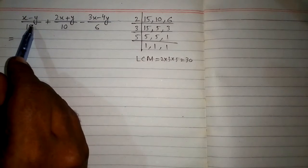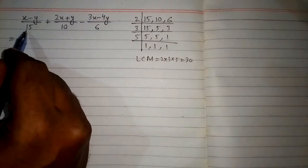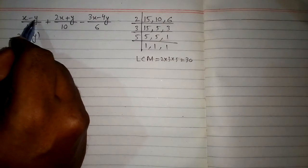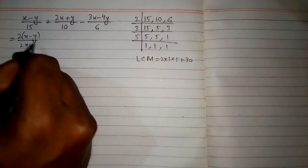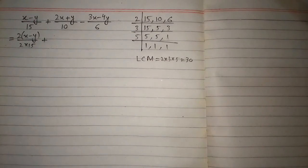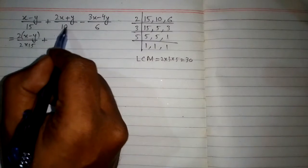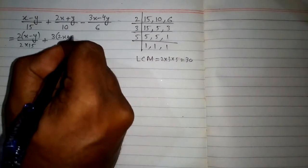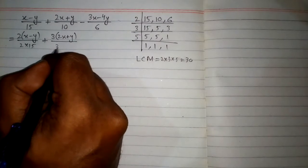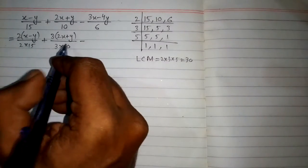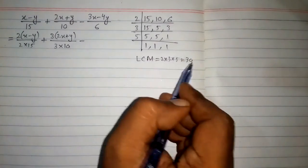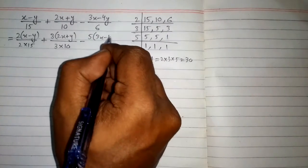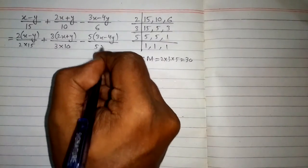Now we will make all the denominators equal to 30. To make 15 into 30, we multiply 15 by 2, so we must also multiply the numerator by 2: we get 2 times (x − y) upon 2 times 15. Then we multiply 10 by 3 to get 30, so we multiply the numerator by 3: we get 3 times (2x + y) upon 3 times 10. Then we multiply 6 by 5 to get 30, so we multiply the numerator by 5: we get 5 times (3x − 4y) upon 5 times 6.